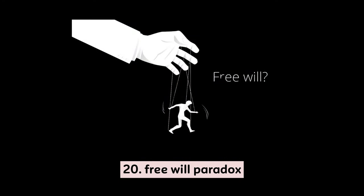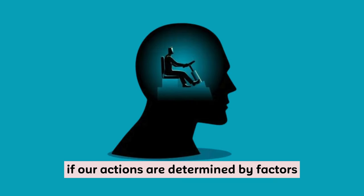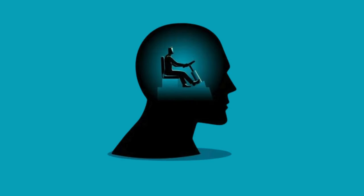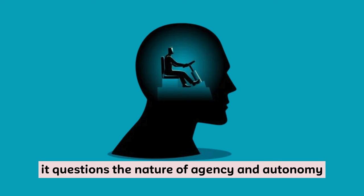20. Free Will Paradox. If our actions are determined by factors beyond our control, do we truly have free will? It questions the nature of agency and autonomy.